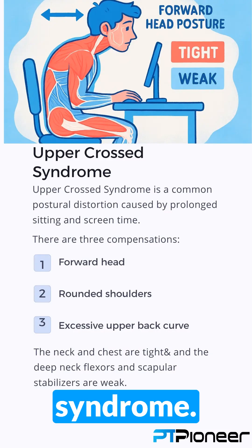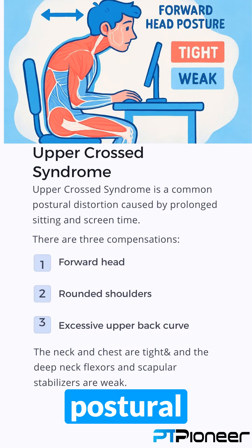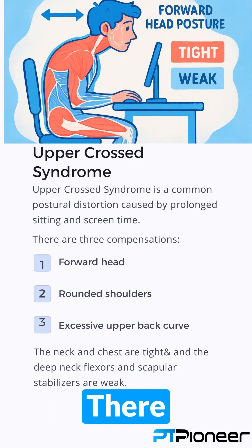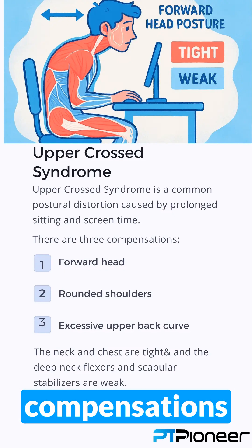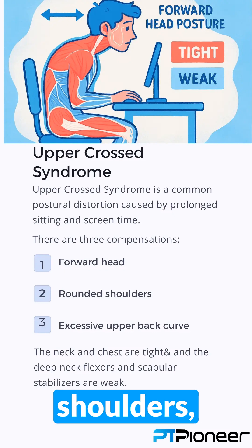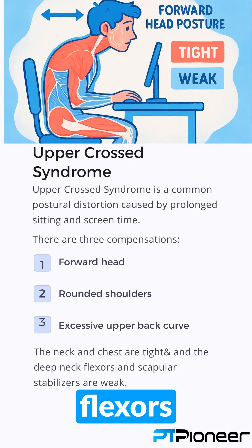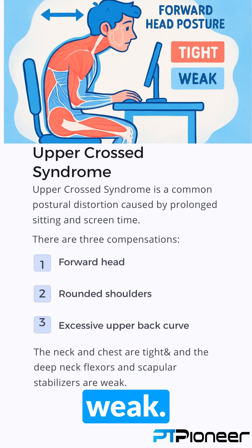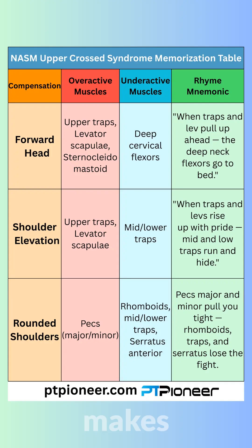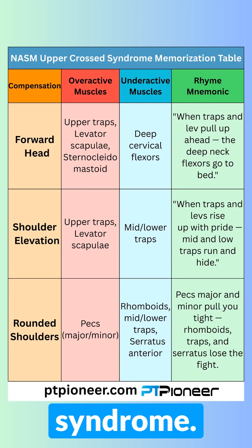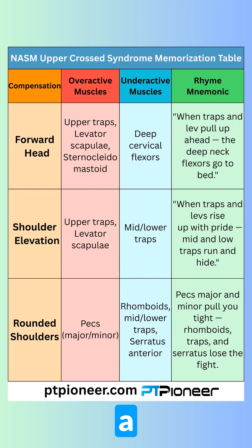Number three: Upper crossed syndrome. Upper crossed syndrome is a common postural distortion caused by prolonged sitting and screen time. There are three compensations: forward head, rounded shoulders, and excessive upper back curve. The neck and chest are tight, and the deep neck flexors and scapular stabilizers are weak. This table makes it super easy to memorize overactive and underactive muscles in upper crossed syndrome. Take a screenshot now.